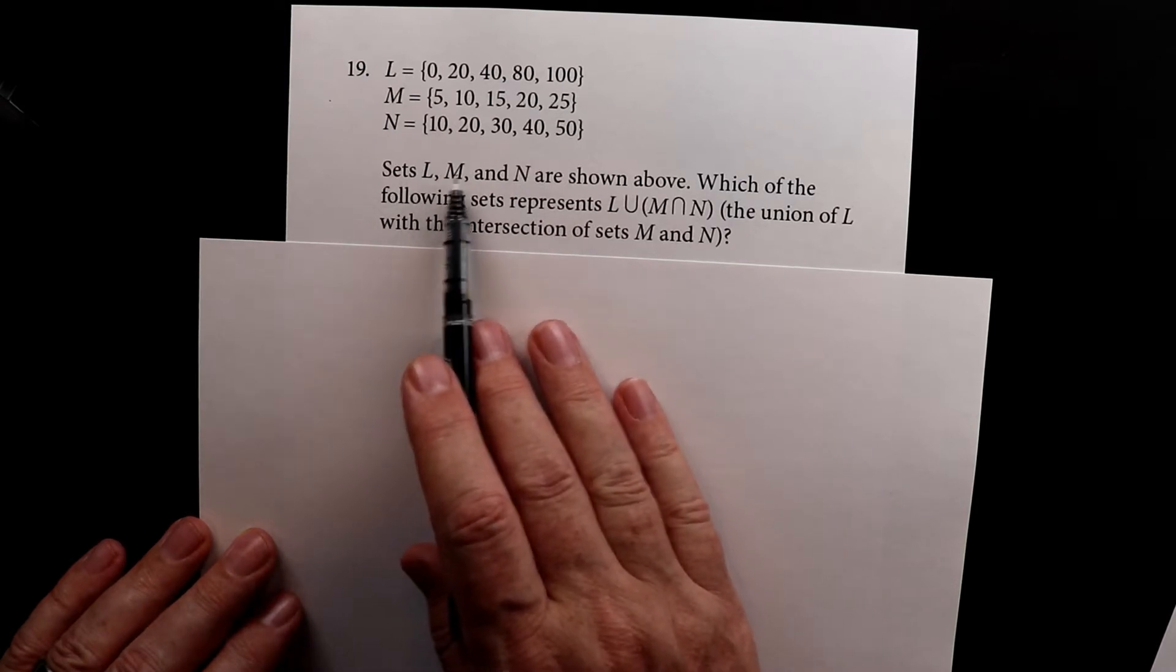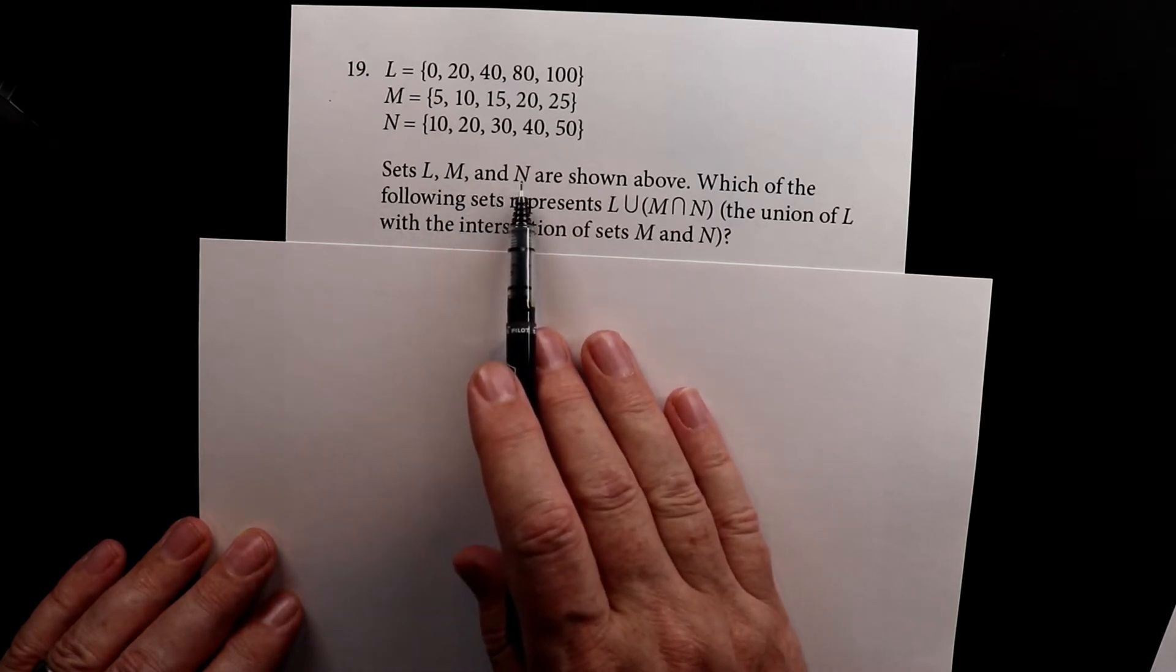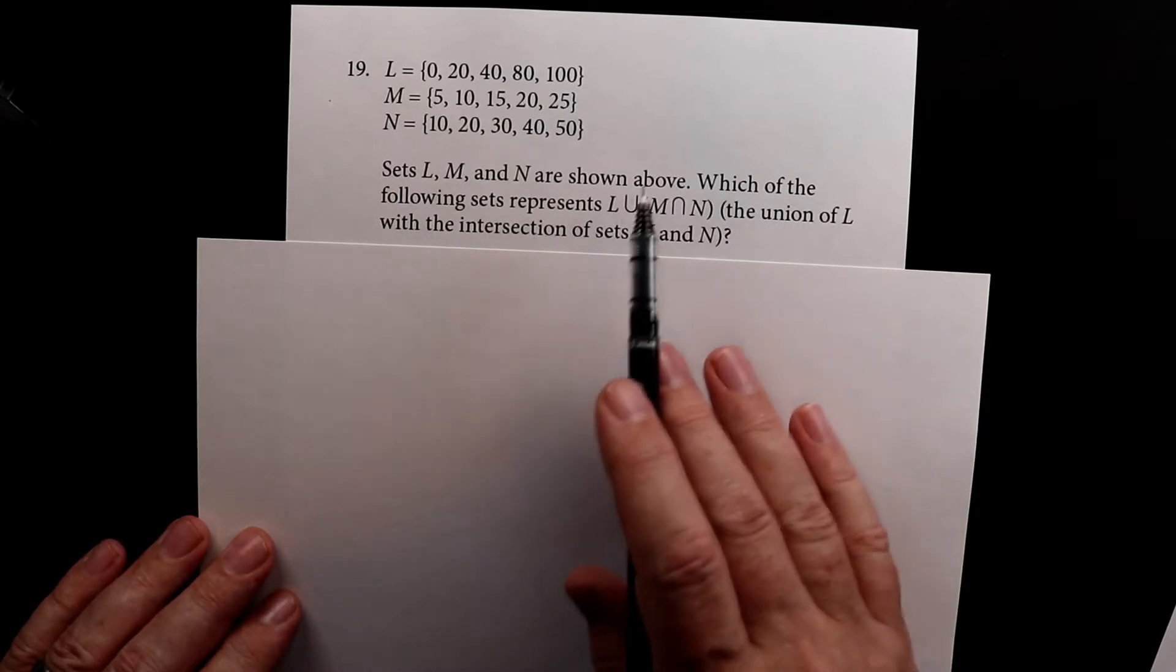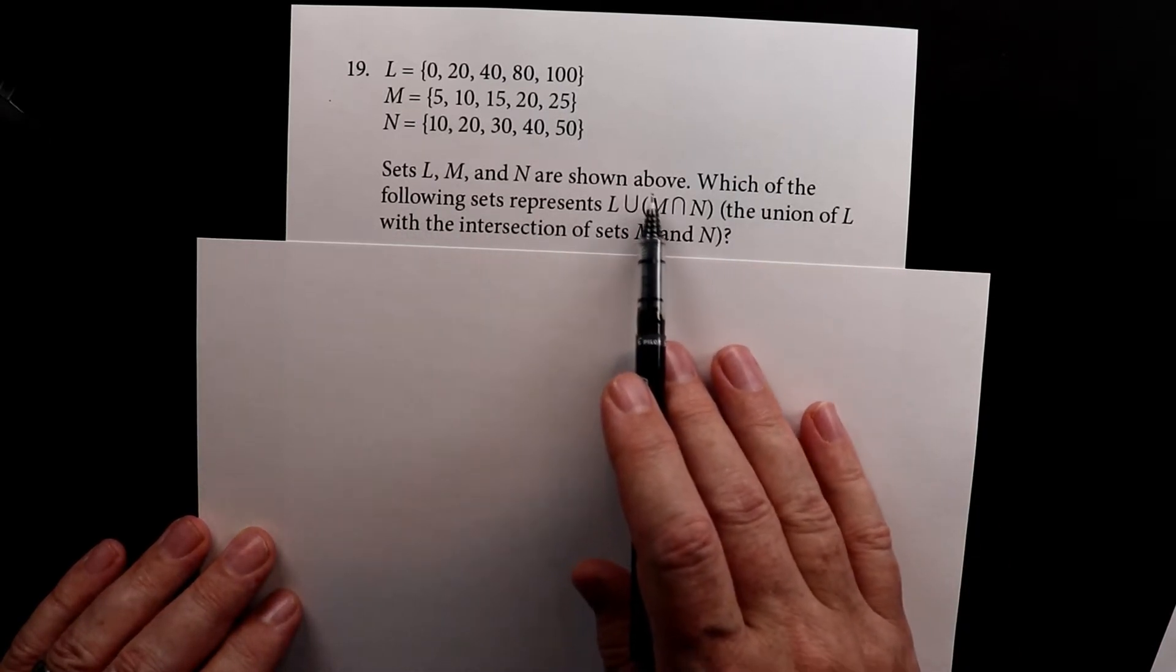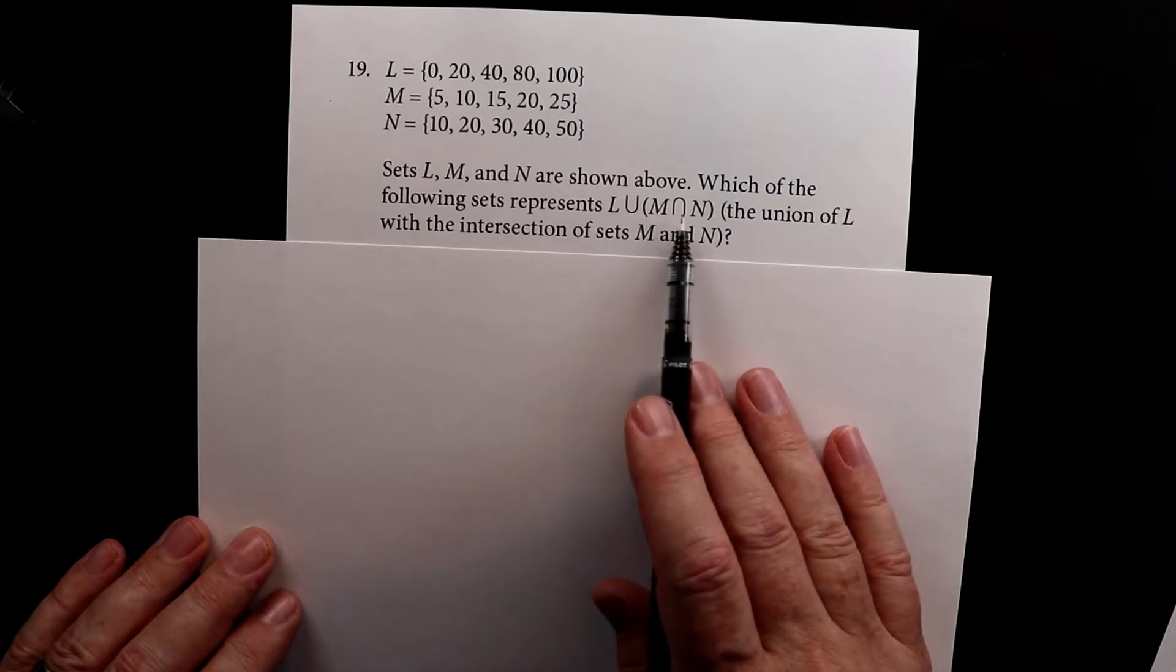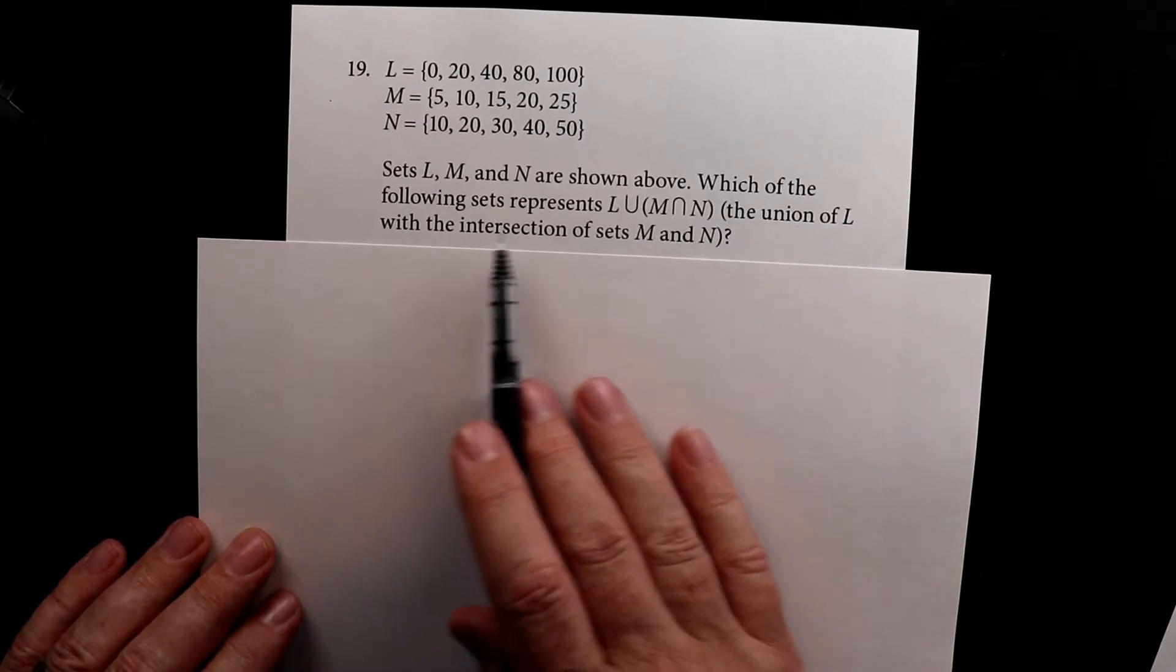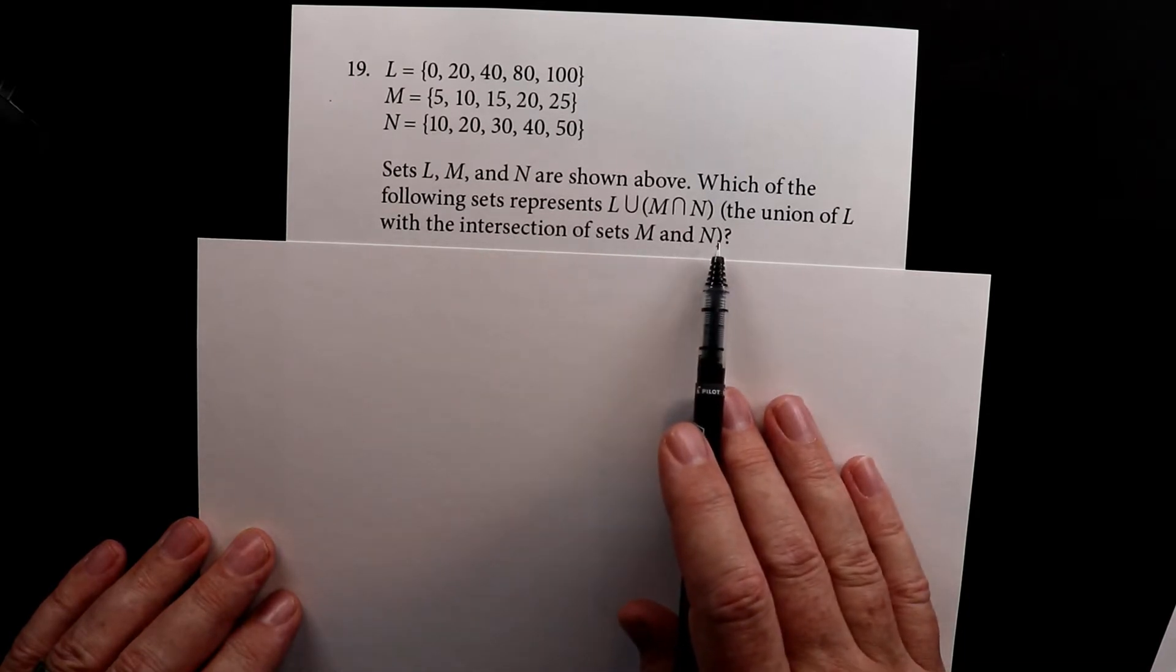So sets L, M, and N are shown above. Which of the following sets represents L union and then in brackets M intersection N? The union of L with the intersection of sets M and N.